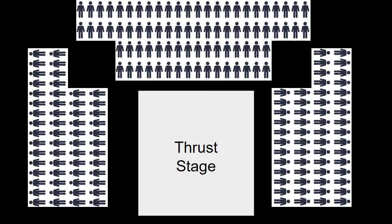The second type of stage, which is not as common, is called the thrust stage. As you can see, there are people sitting in all three directions — front, left, and right from the actors. The thrust stage doesn't allow for as many set changes, or any changes at all depending on the play.